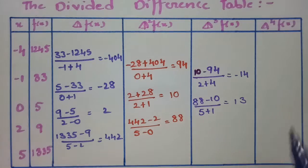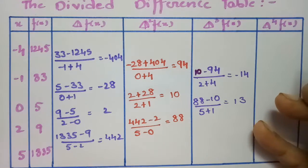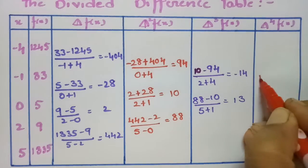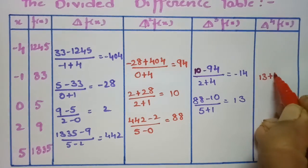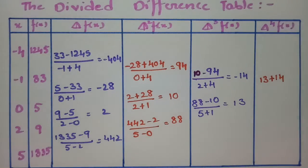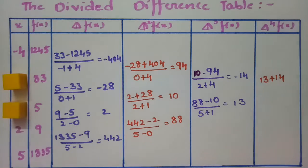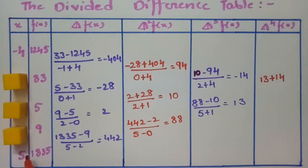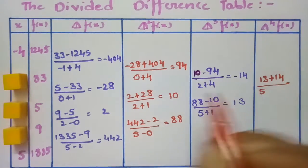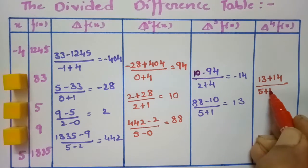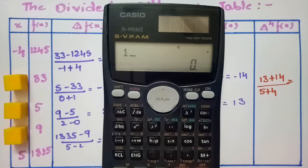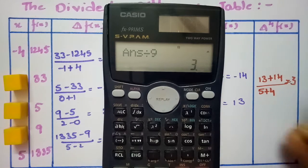Now coming to the fourth divided difference. For this we close 3 values. This is (13 minus minus 14) divided by (5 minus minus 4), so (13 plus 14) divided by 9, and the value here is plus 3.